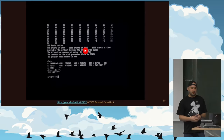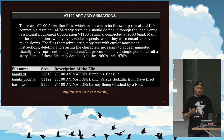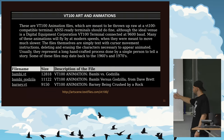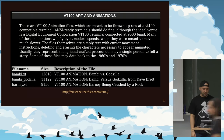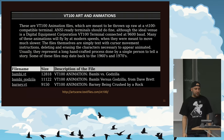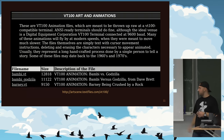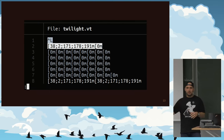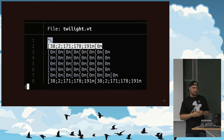The best way to show this is with a little video. This was not ancient Egyptian alien technology — this was all possible in the 80s, thanks to ANSI escape codes. There's actually a whole page of art and animations for VT-100: Bambi, Bambi versus Godzilla, Bambi versus Godzilla from Dave Brett (some guy didn't like the first version), Barney being crushed. We have around 90-some animations there. The one I showed was twilight.vt.